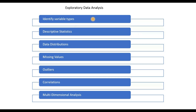First, identify variable types. This step helps you identify the different types of variables in your data. The main variable types are categorical variables, which can be nominal or ordinal; numerical variables, which can be discrete or continuous; and date variable types.